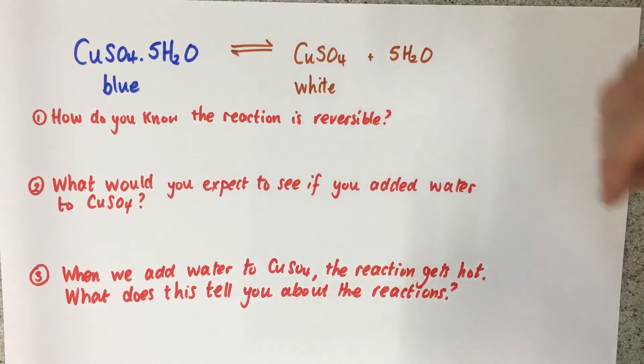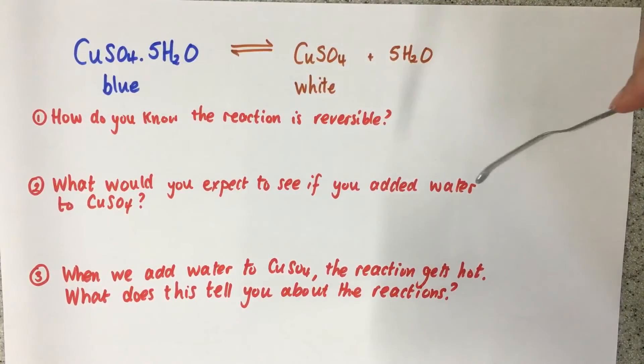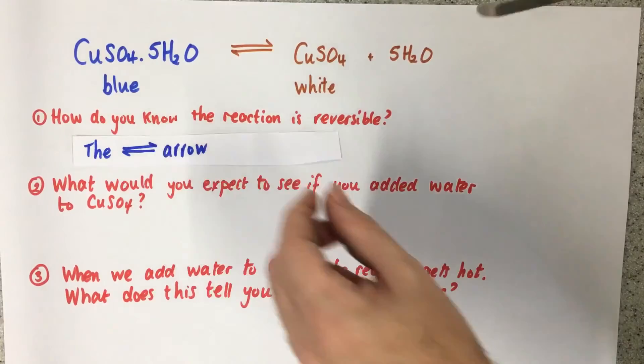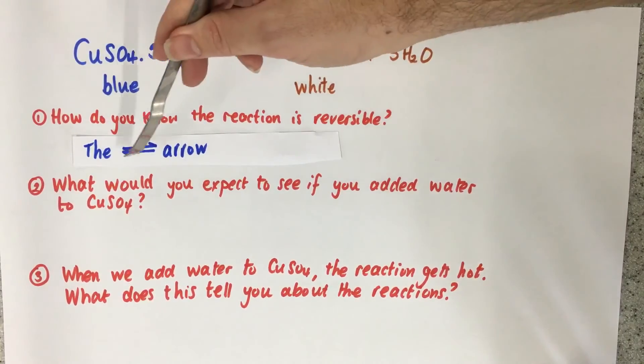So the first question says, how do you know the reaction is reversible? And we know the reaction is reversible because the reaction has got a reversible reaction arrow there.